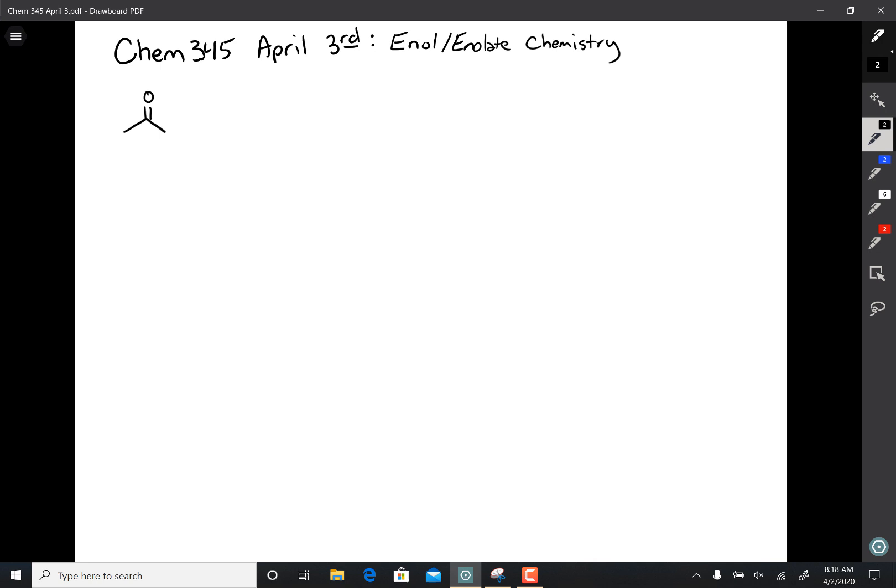It turns out carbonyls, when they're in acid or base, are in equilibrium with another species called an enol. You only need the slightest amount of acid or base to catalyze this equilibria. The walls of a glass beaker are acidic enough to catalyze this. So it's very difficult to stop this equilibrium process.